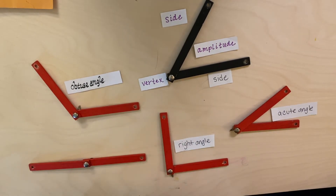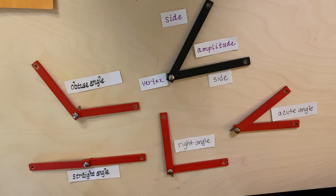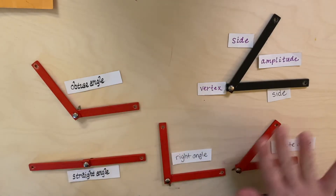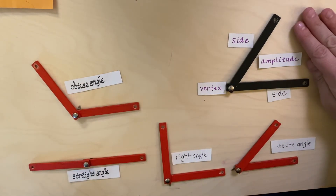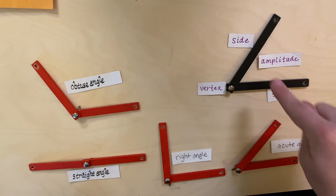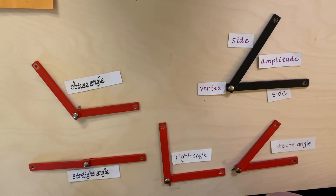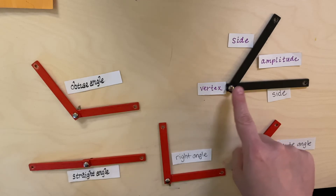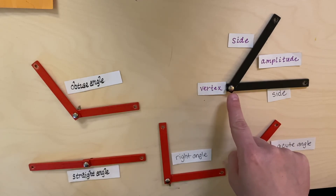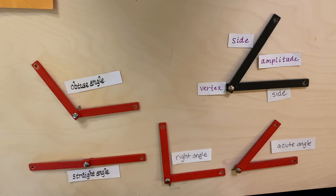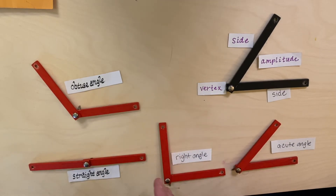Our last type of angle looks just kind of like a straight line. It's called a straight angle. Two lines come together, it still has a vertex, and they make a straight angle when they're completely a straight line. To review: the parts of an angle are two sides or two legs, the vertex is where the two legs come together to make a point, and the amplitude is the space between the two legs.